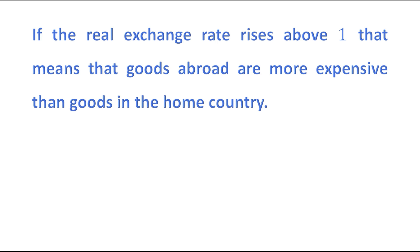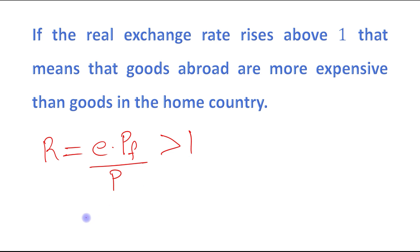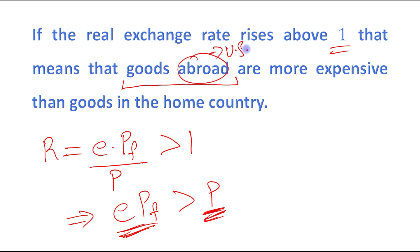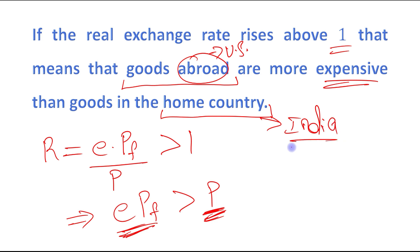If the real exchange rate rises above 1, that means goods abroad are more expensive than goods in the home country. R = E × PF / P greater than 1 means E × PF is greater than P — that is, foreign prices are greater than domestic prices. The commodity will cost you more in the United States compared to India. Goods abroad — in our case the United States — are more expensive than goods in the home country, India.